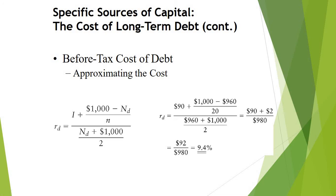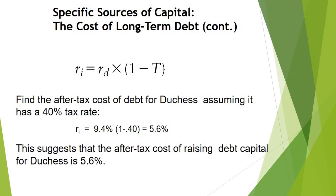Now we need to find the after-tax cost of debt because interest payments on debt are always tax deductible. To find the after-tax cost of debt, we need to know the tax bracket of the firm. Judges Corporation has a tax rate of 40%. So after-tax cost of debt equals the before-tax cost of 9.4% times (1 minus 0.40), which gives an after-tax cost of debt of 5.6%.